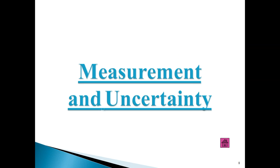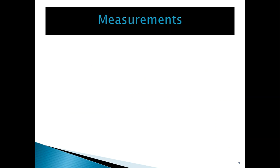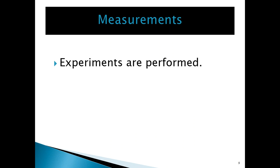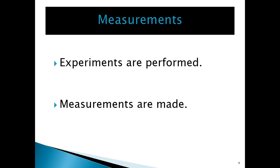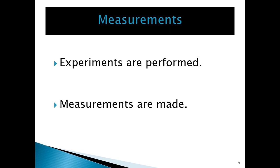Now let's talk about measurements and uncertainty when it comes to measuring any quantity. Whenever you measure anything, there are two types of numbers involved. Measurement is very important in sciences — if you are doing any experiments, you can't avoid doing some sort of measurement: measurement of volume, measurement of mass, measurement of length, etc.